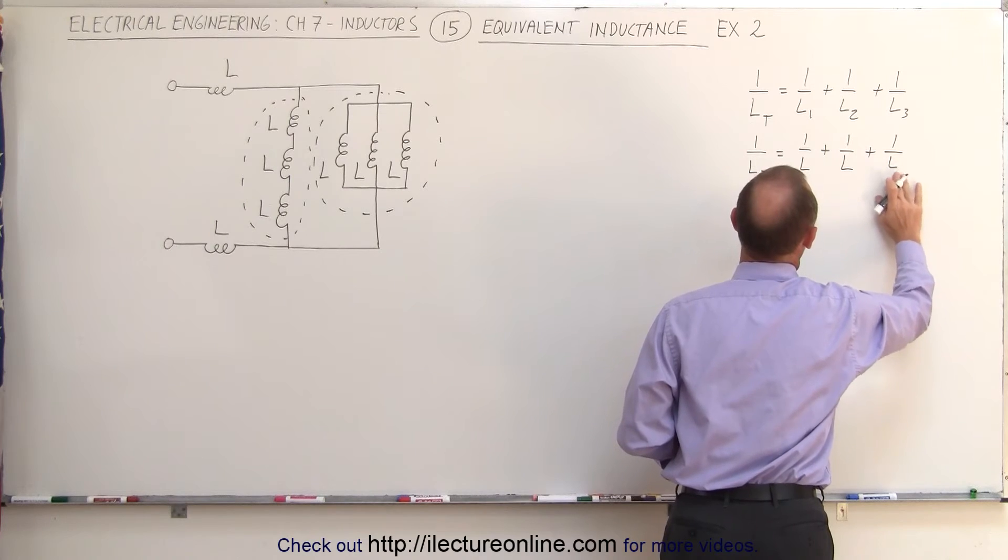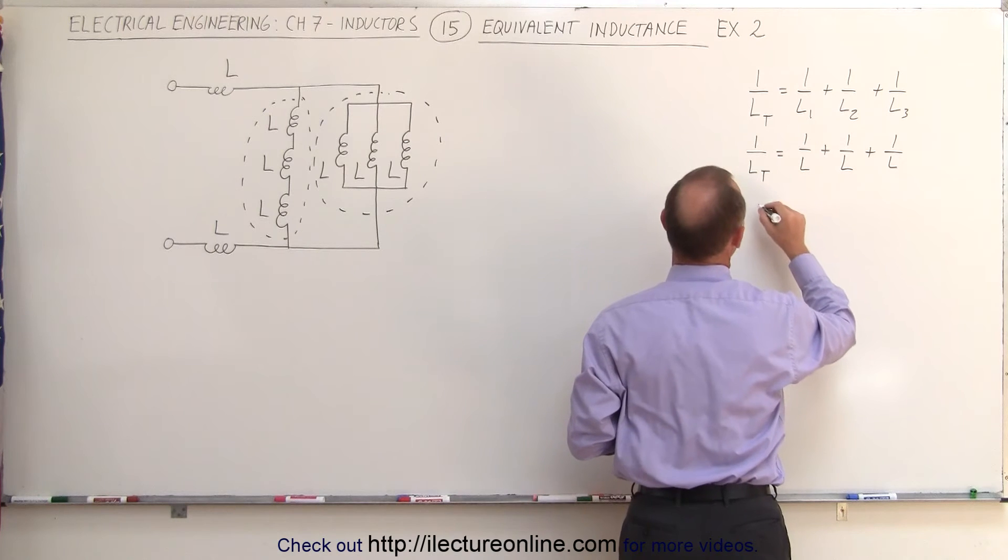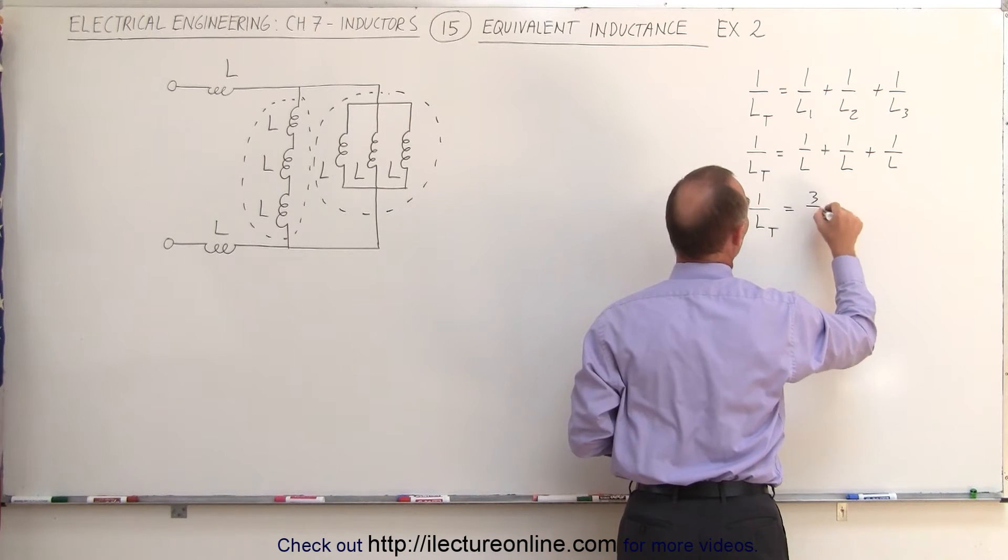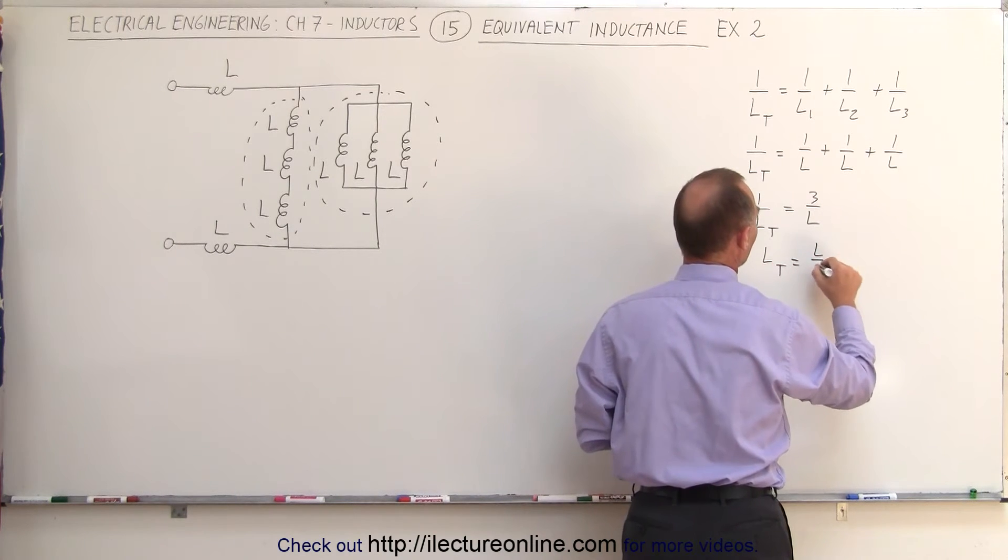Not four, L. But notice there's three of them right here, so these are the three in parallel. That means that one over L total equals three over L. And then taking the inverse, we can say L total equals L over three.